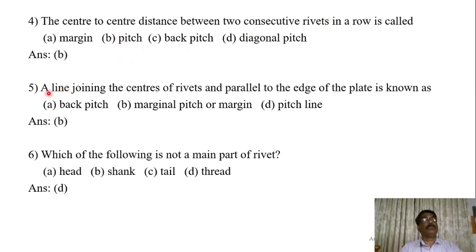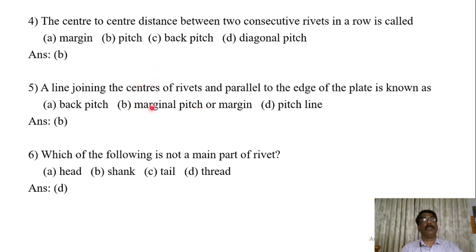The fifth question: a line joining the center of rivets and parallel to the edge of the plate is known as — back pitch, marginal pitch or margin, or pitch line? The answer is margin or marginal pitch. Margin is the distance from the center of a rivet to the edge of the plate.